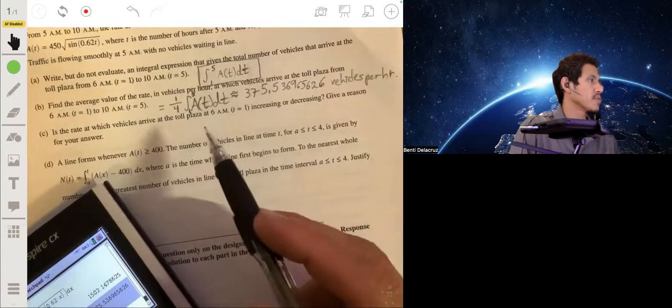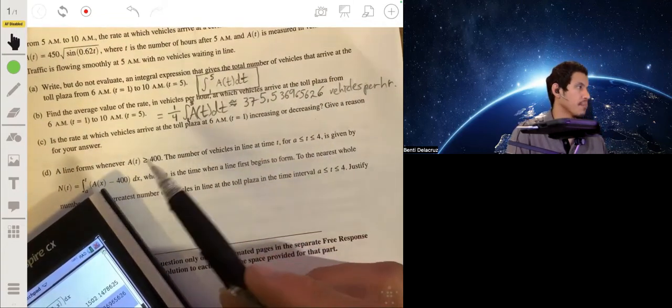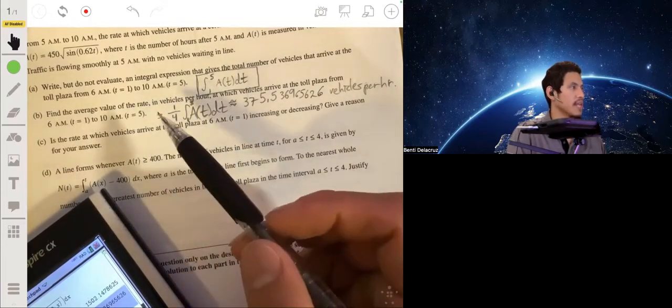Part C. Is the rate at which vehicles arrive at the toll plaza at 6 a.m. increasing or decreasing? Give a reason for your answer. Okay, so you're essentially just going to look at the rate of the rate.